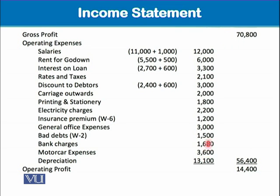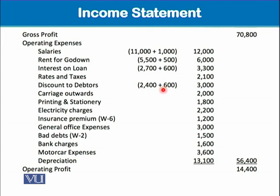From gross profit we subtract all operating expenses. Salaries: 11,000 from the trial balance plus 100 outstanding salary gives 12,000 total. Similarly, rent and interest on loan have outstanding amounts — these accrued or due amounts are added to what was already paid, giving final figures of 12,600 and 3,300 respectively. Rates and taxes are taken straight from the trial balance. Discount on debtors: 2,400 from the trial balance plus 600 wrongly taken to the discount received account gives 3,000.